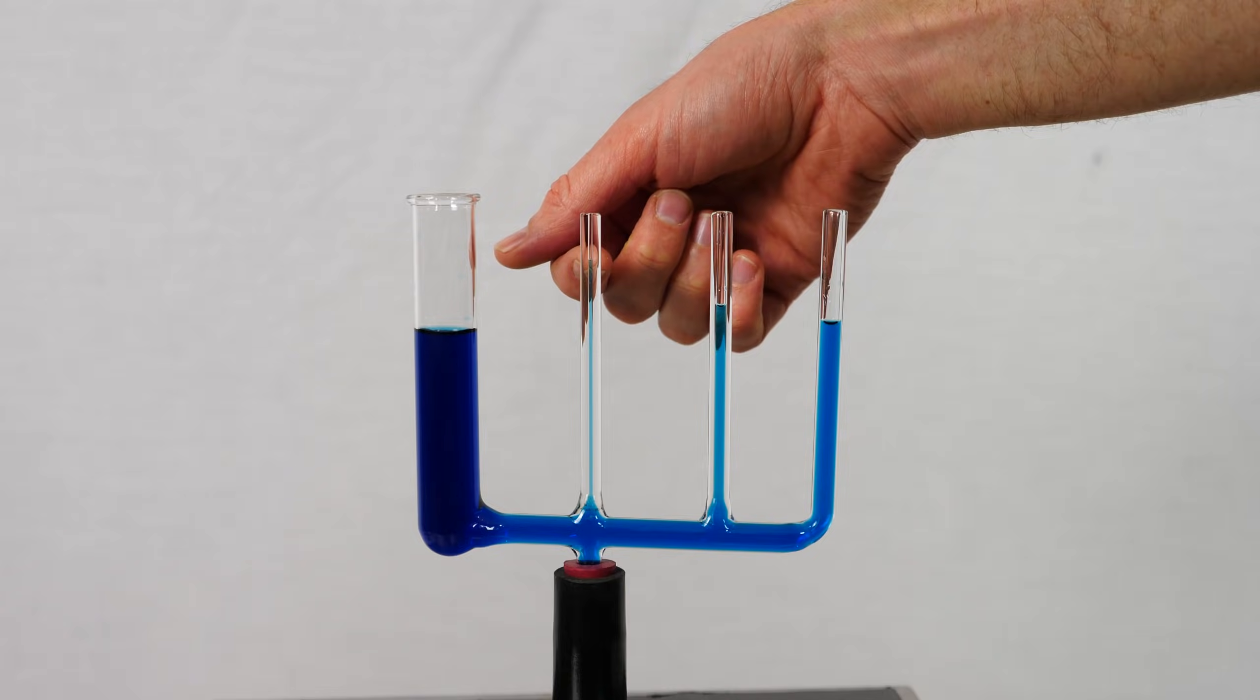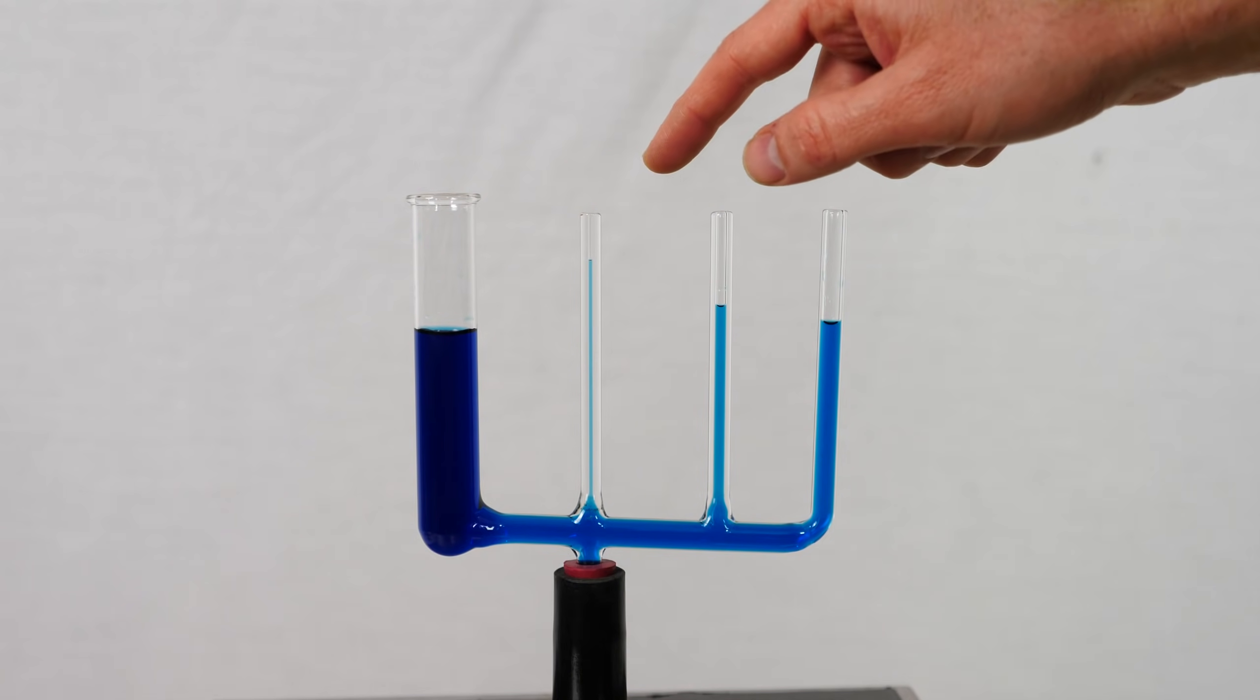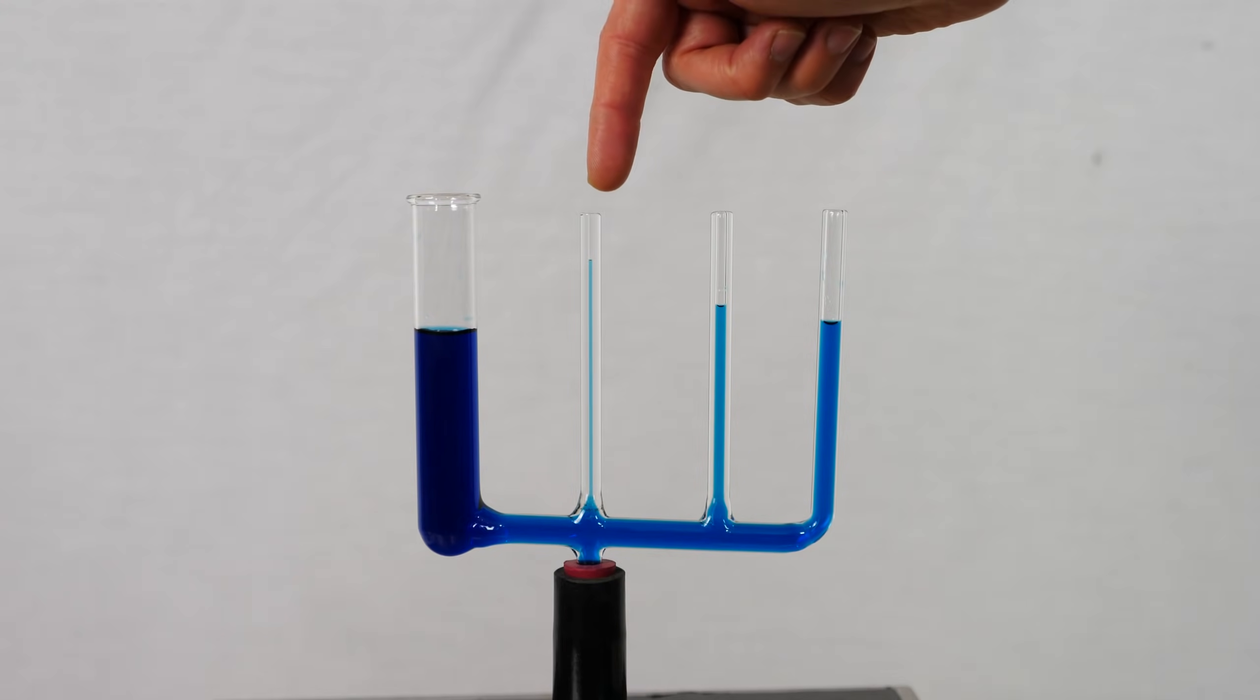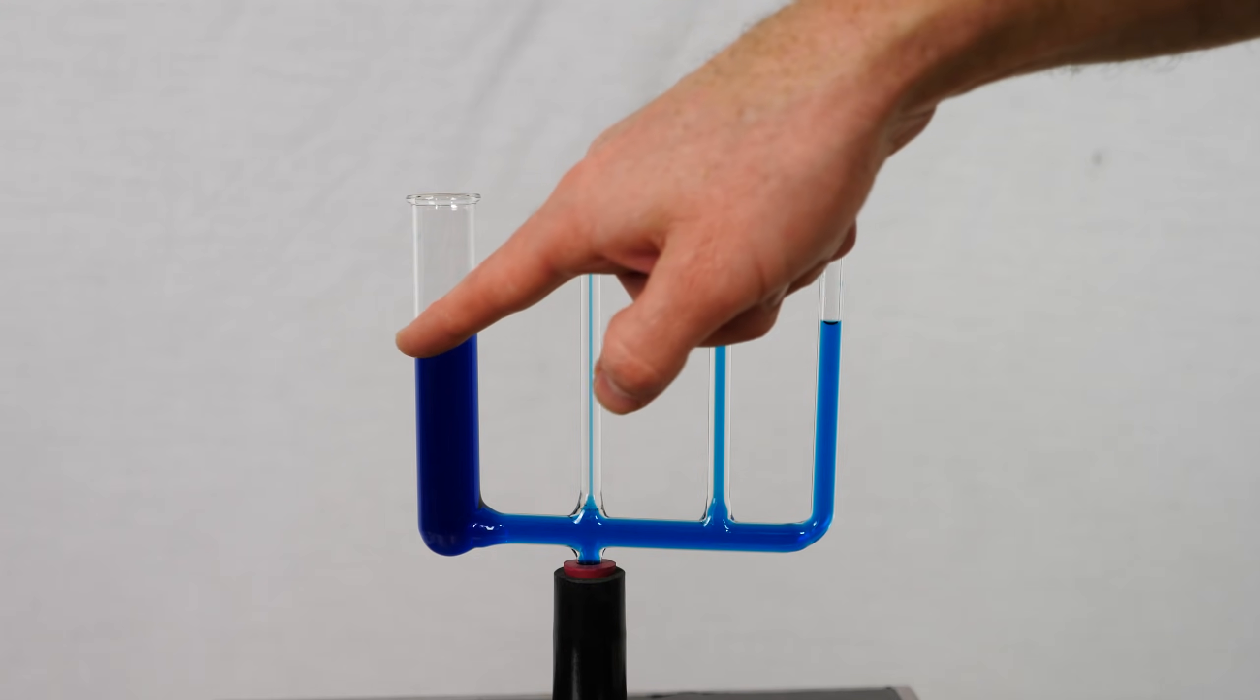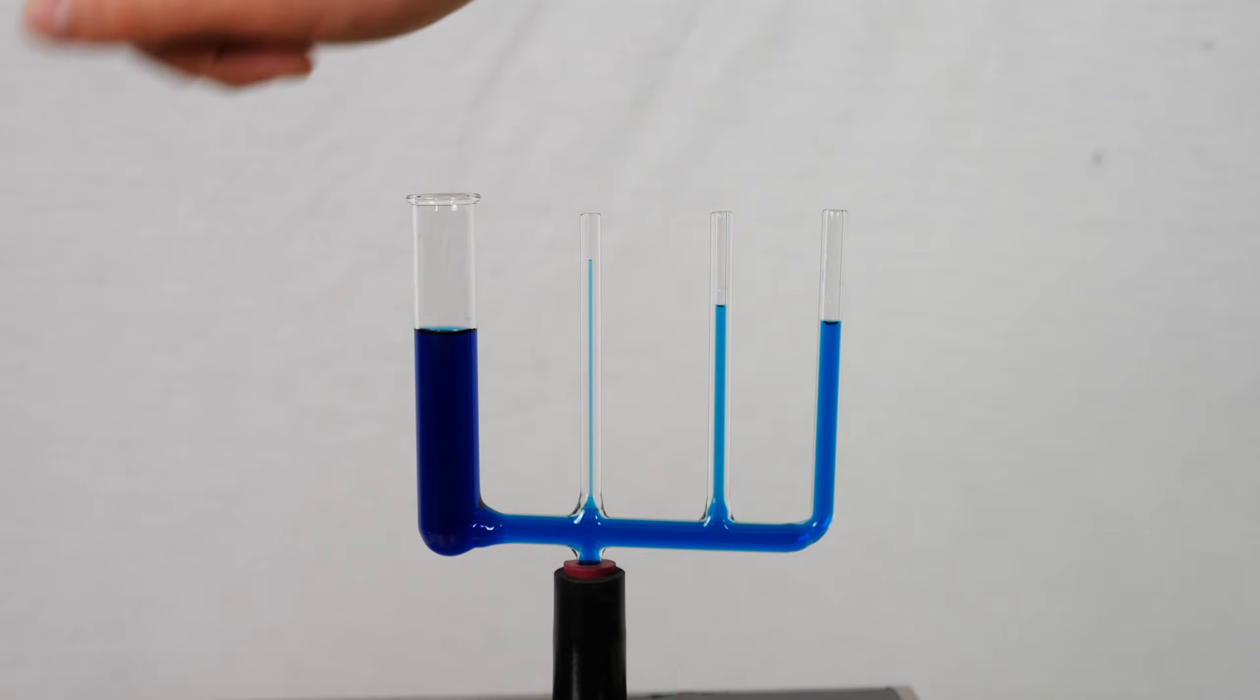So that should be really weird to you. That means that this small liquid gas interface here, the two pressures aren't equal. It means that the gas pressure is higher than the liquid pressure. As opposed to this tube where the liquid pressure and the gas pressure are exactly equal right at the interface.